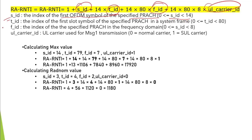t_id is the time domain index — the index of the first slot of a specified PRACH in a system frame number — and its value is 0 to 18. f_id is the frequency domain location — it tells about the frequency domain location and index of a specified PRACH — and its value is 0 to 8. So these parameters are used to calculate the RA-RNTI.